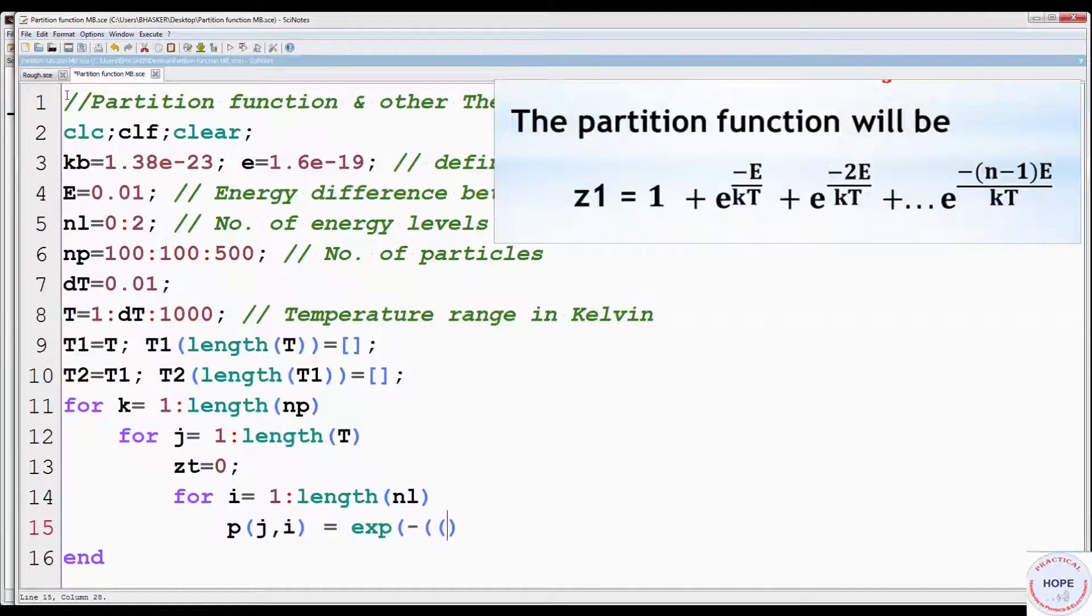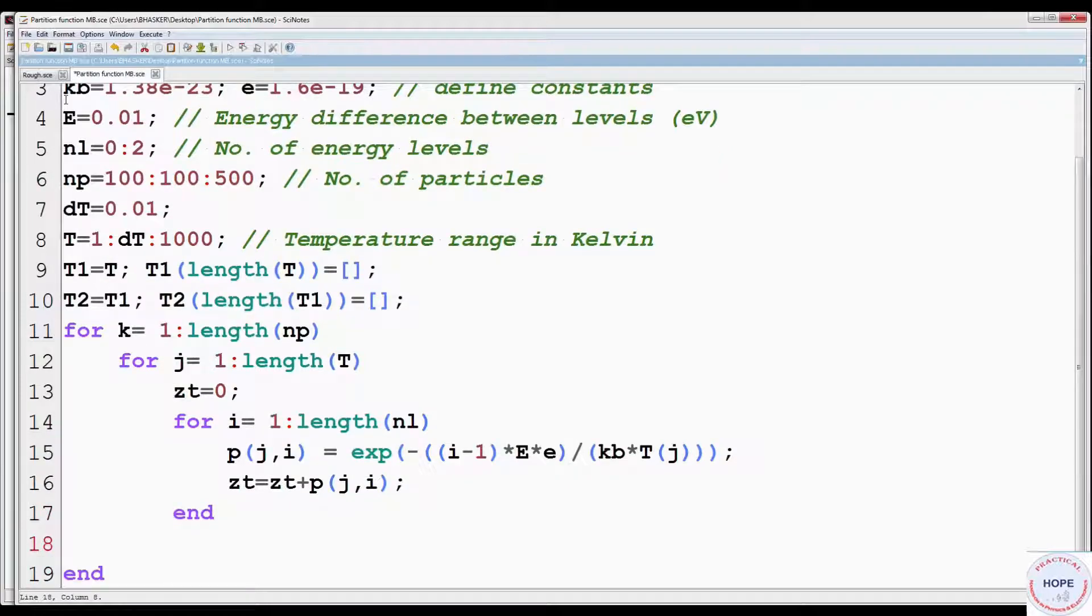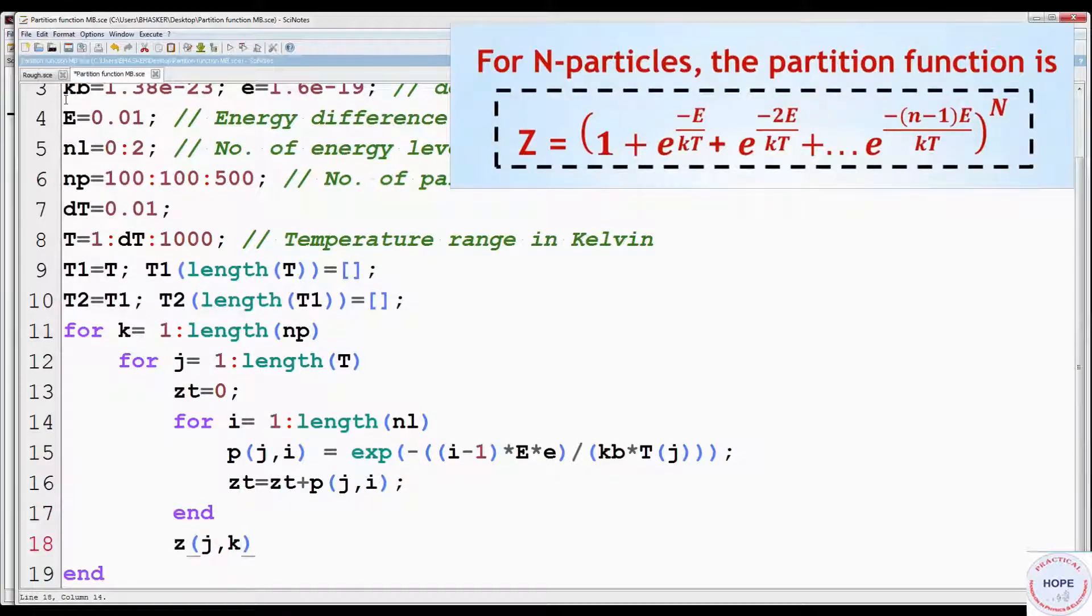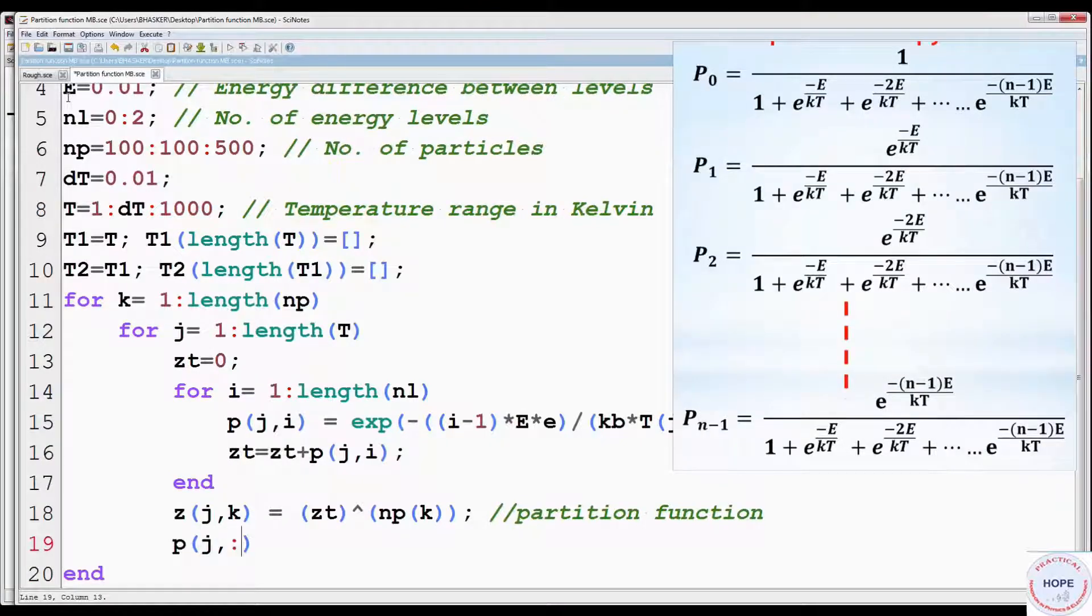First we will evaluate the values of the exponentials. Then we have to add the values of these exponentials, since partition function is the sum of all these exponential values. ZT is the partition function for one particle only. If we want to calculate the partition function for NP, then we have to evaluate like this: Z equal to ZT raised to the power NP. We can also evaluate the values of probability of occupancy. Since we have already evaluated the values of exponential, we just need to divide P by ZT.